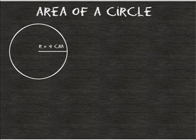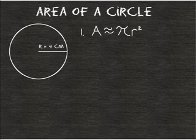The first thing we have to do is state our formula. To find the area of a circle, the formula is area is approximately equal to pi times radius to the second power.